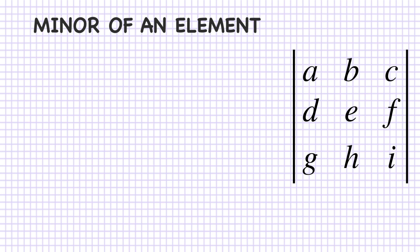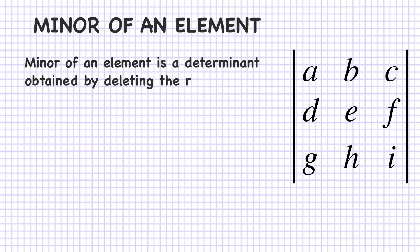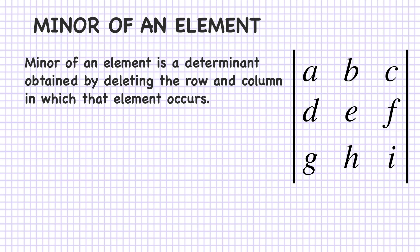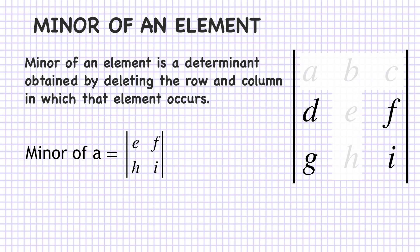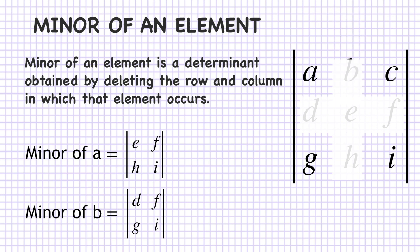Next is the minor of an element. The minor of an element is the determinant obtained by deleting the row and column in which that element occurs. For example, the minor of A is obtained by hiding the row and column of A — the remaining numbers E, F, H, I form the minor. Similarly, the minor of B is obtained by hiding the row and column of B, leaving D, F, G, I. And the minor of E leaves A, C, G, I.